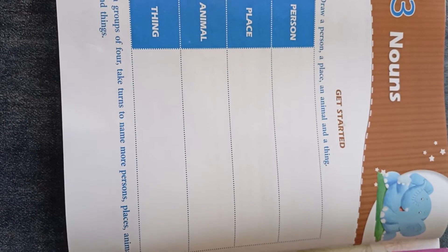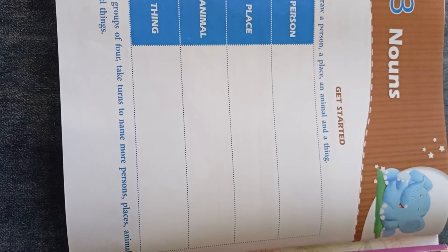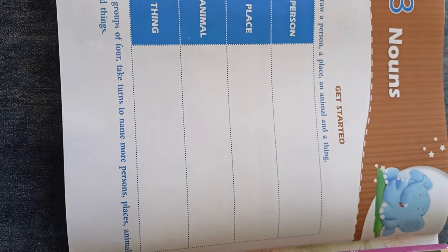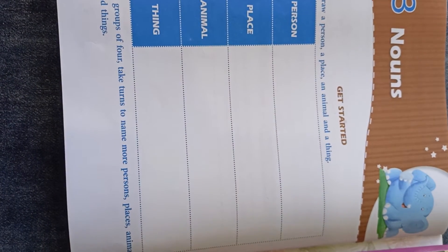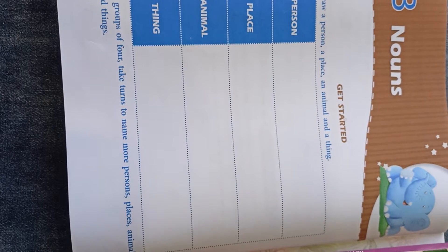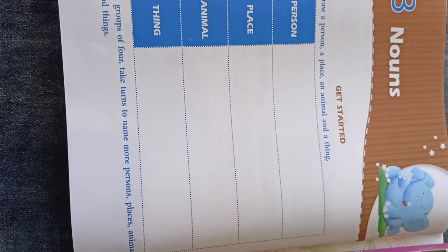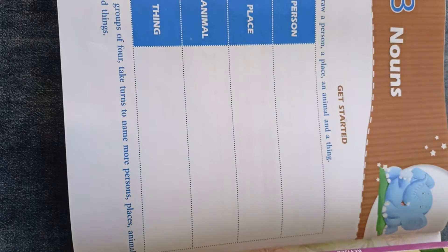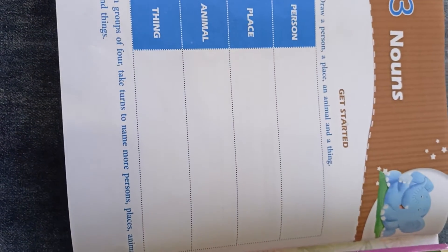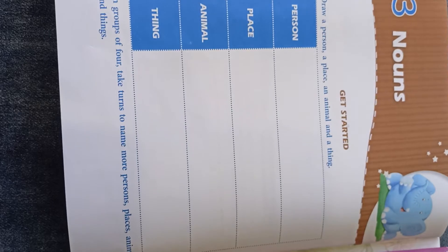As we all know, we have a lot of things around us. So dear students, what do we see around us? We get to see people, animals, places and things. And they all have different names. So noun is a naming word.